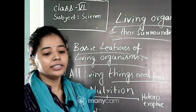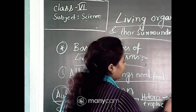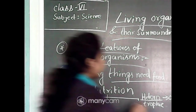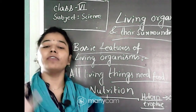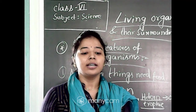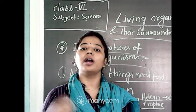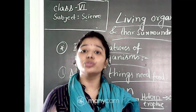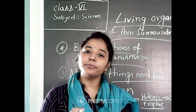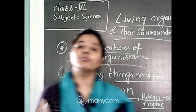Heterotrophic means: 'hetero' means other and 'trophos' means nourishment or nutrition. So organisms that depend on others for their food and cannot prepare their own food are called heterotrophs, and their mode of nutrition is known as heterotrophic mode of nutrition.